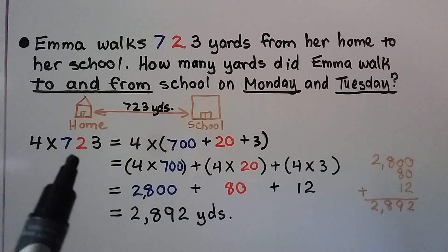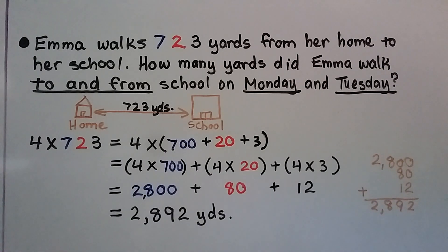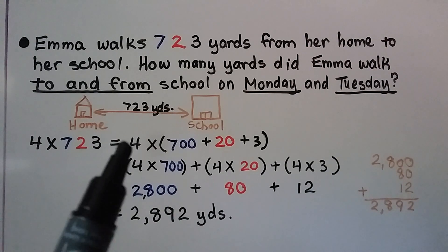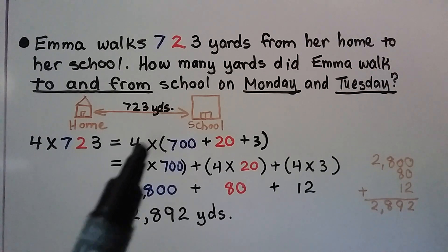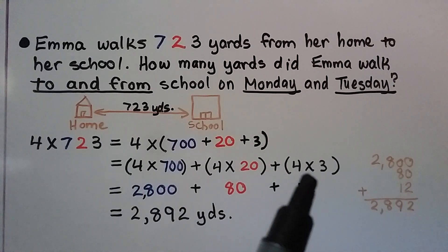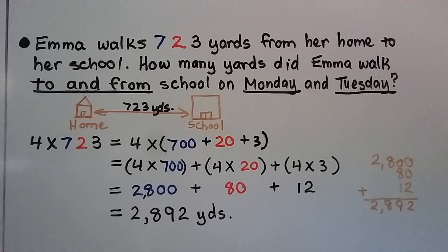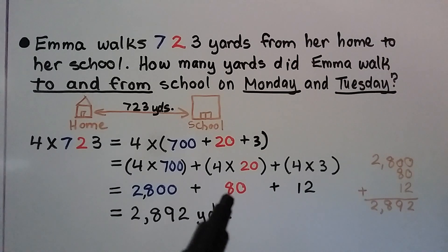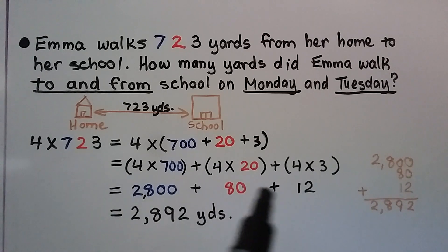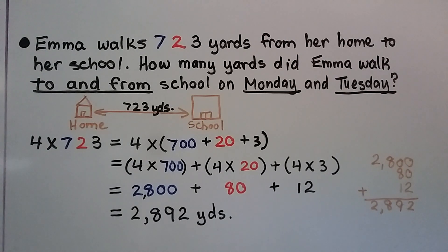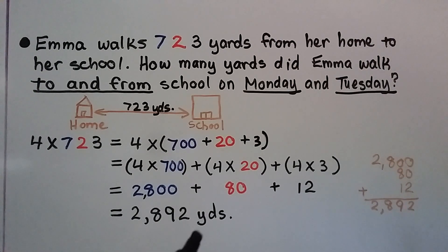We break 723 into 700 plus 20 plus 3. Using the distributive property, we multiply 4 times 700 equals 2,800; 4 times 20 equals 80; and 4 times 3 equals 12. These are our partial products. We add them and get 2,892 yards. Note that the answer is labeled with yards, which you need to do in a word problem.